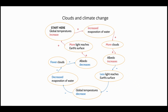And if average albedo decreases, more light will reach Earth's surface, which will cause global temperatures to increase on average, causing this cycle to repeat. In this way, clouds work to slow down climate change with a negative feedback loop that somewhat slows changes in global temperatures, even as other factors like carbon dioxide push them higher.